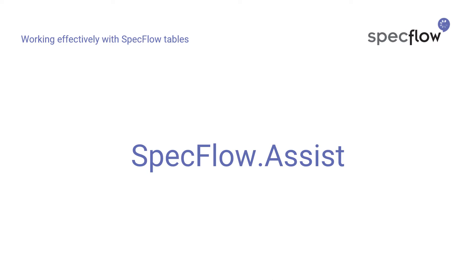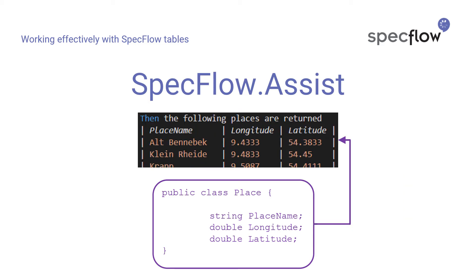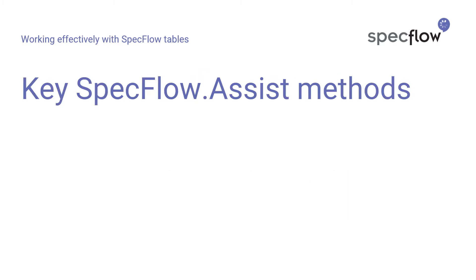To help you deal more effectively with table arguments and remove that boilerplate code needed to parse and process values in table cells by hand, SpecFlow offers a table support library called SpecFlow.Assist. SpecFlow.Assist offers a number of methods that can be used to convert table rows to C# objects as well as to compare C# objects to table rows — meaning it can be used in both Given steps and Then steps. In this video, I want to highlight four key SpecFlow.Assist methods.